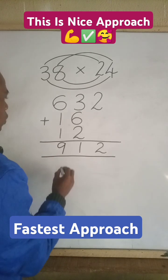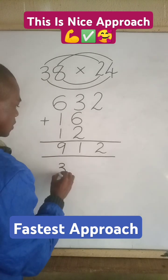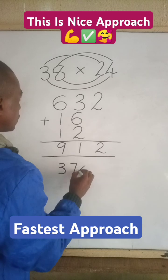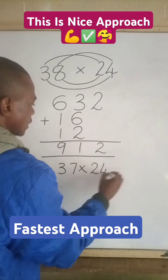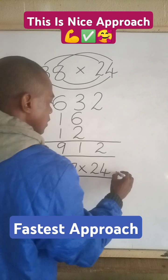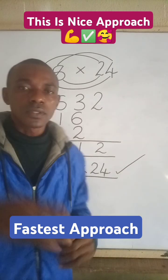So you can practice this: 37 multiplied by 24. Drop your answer in the comment section. Thank you, bye bye.